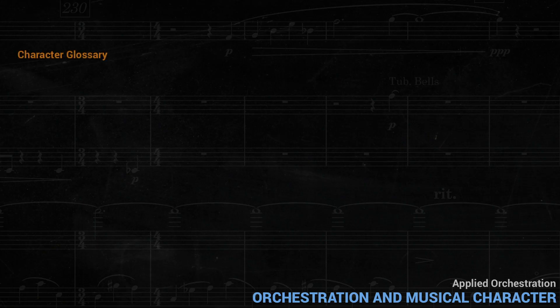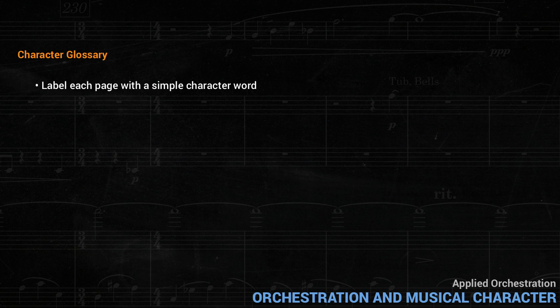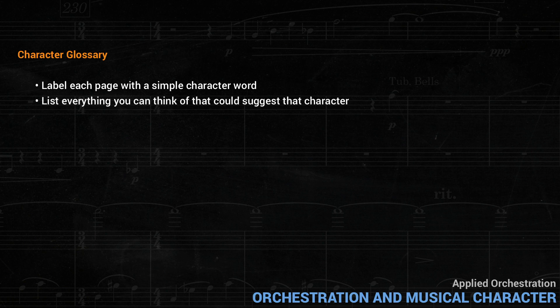You can see how much orchestration contributes to the build-up and its culmination. To get used to thinking in this way, I often suggest that students take a notebook and label each page with a simple character word, like playful or sad, heroic or restless. Then on that page, list everything you can think of that would suggest that character — not just in the orchestration, but also tempo, harmony, and so on. This is the character glossary. As an example, let's imagine the page for playful.